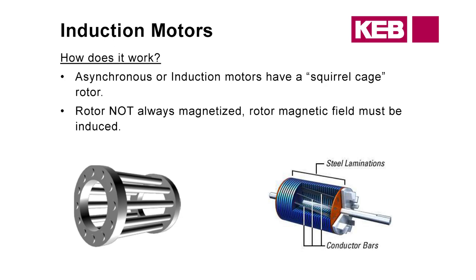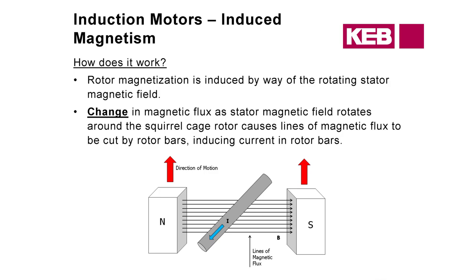For the induction motors, what's different is the rotor itself — it's got these steel laminations, sometimes called squirrel cage. There are no magnets here; it's just these steel bars connected on either end. If you think of the stator as the outer part and this middle portion as the rotor, you've got your north pole, your south pole, and these lines of magnetic flux. When current is passed through this portion of the rotor, it's going to start to rotate due to the change in magnetic flux — rotating through these lines of changing magnetic flux is what causes your torque generation.